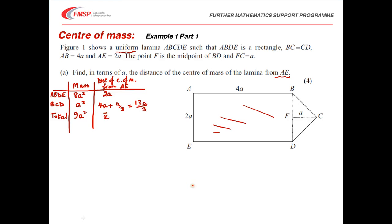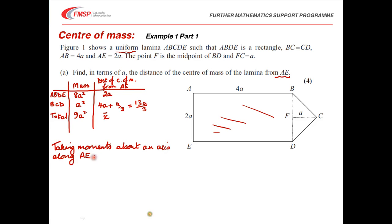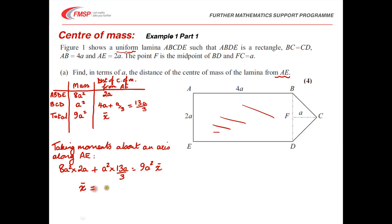Don't forget to tell the examiner which axis you're working with — taking moments about an axis along AE. On the left-hand side we take moments of each component: 8a² × 2a for the rectangle, plus a² × 13a/3 for the triangle. That equals the total 9a² × x̄. Simplifying and dividing through by 9a², we get x̄ = 67a/27. That gives our distance from AE.